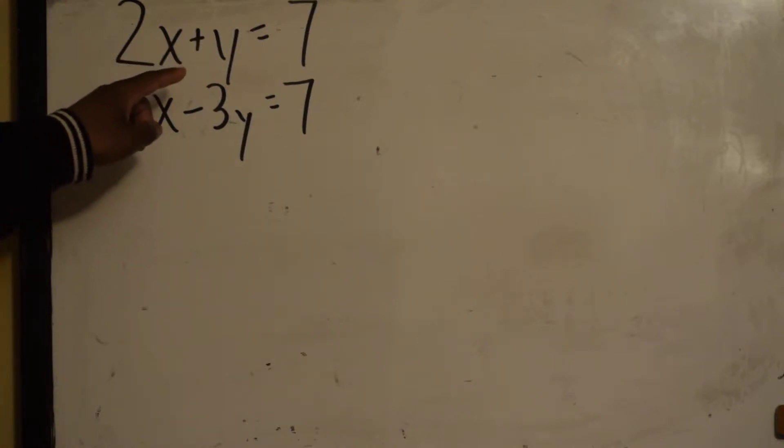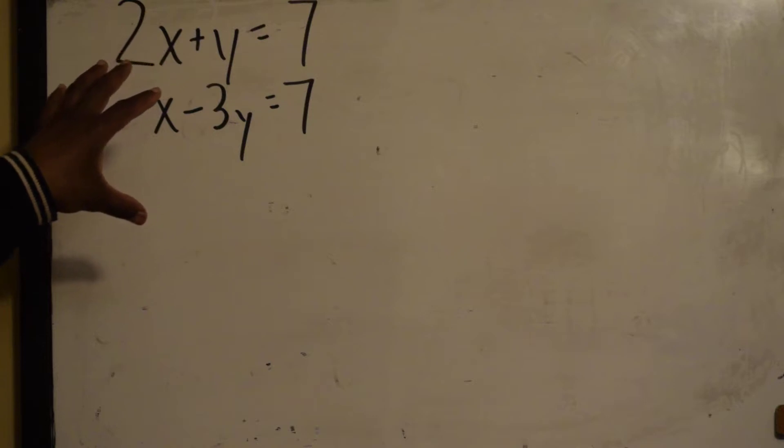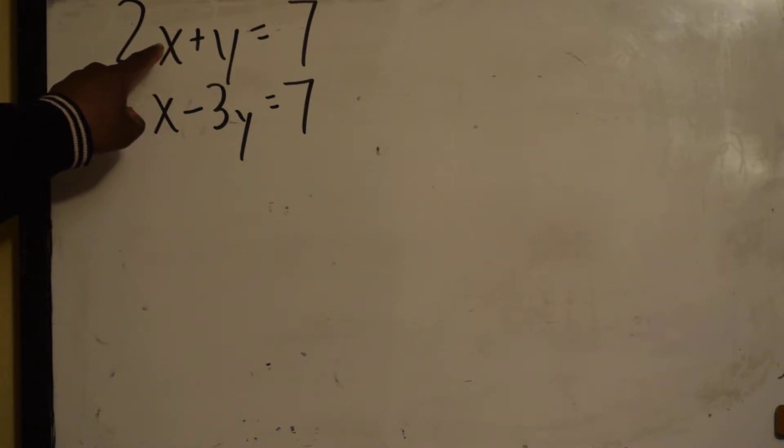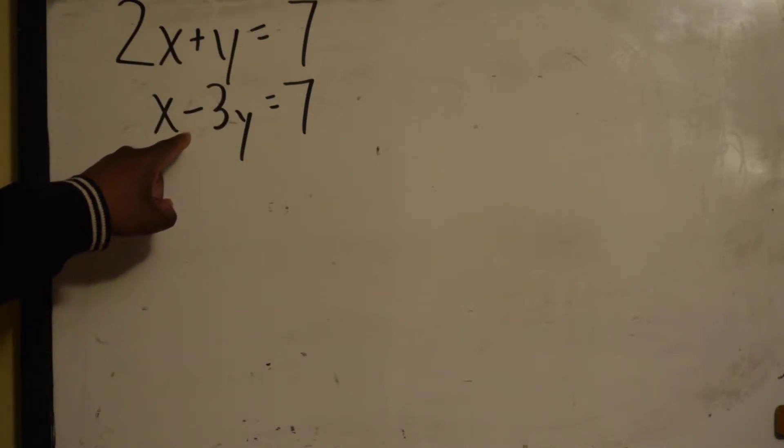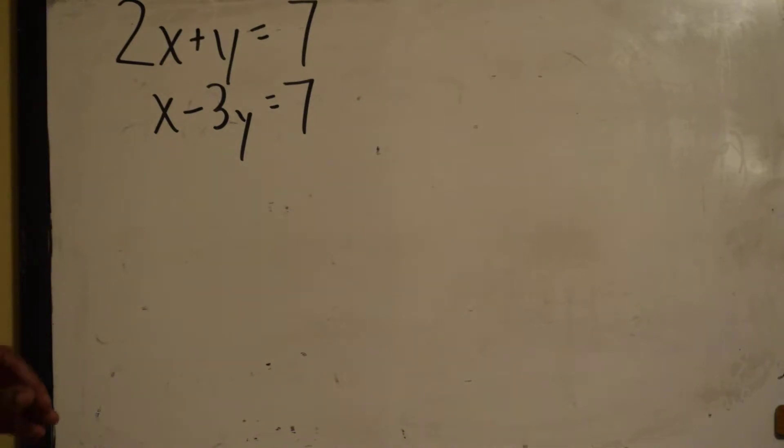We need to find an x and a y that makes both of these simultaneously true. We can find different x's and y's to make each one true, but we need to find an x and a y that make both of them true. That's a little more difficult.